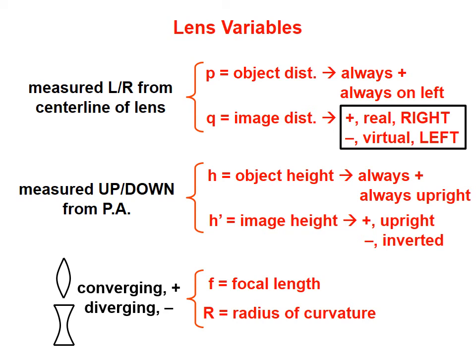Particularly when we get to the math, you must know that converging lenses, which have a cross section somewhat like a football, have positive focal lengths. Diverging lenses, which have a cross section somewhat like an hourglass, have negative focal lengths. It is very important that you know that a big difference between mirror ray diagrams and lens ray diagrams is that real images with lenses appear on the right, while virtual images appear on the left.